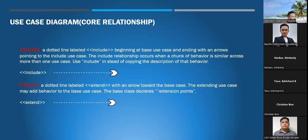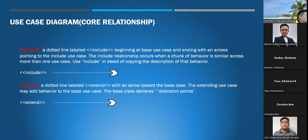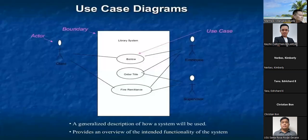Use case diagram relationships: Include — a dashed arrow line labeled 'include,' beginning with one use case and ending with an arrow pointing to the included use case. The include relationship occurs when a chunk of behavior is similar across more than one use case, so instead of copying the description, you use include. Extend — a dashed arrow line labeled 'extend,' with the arrow toward the base case, extending behavior by adding to the base use case. The base class declares extension points that extend.